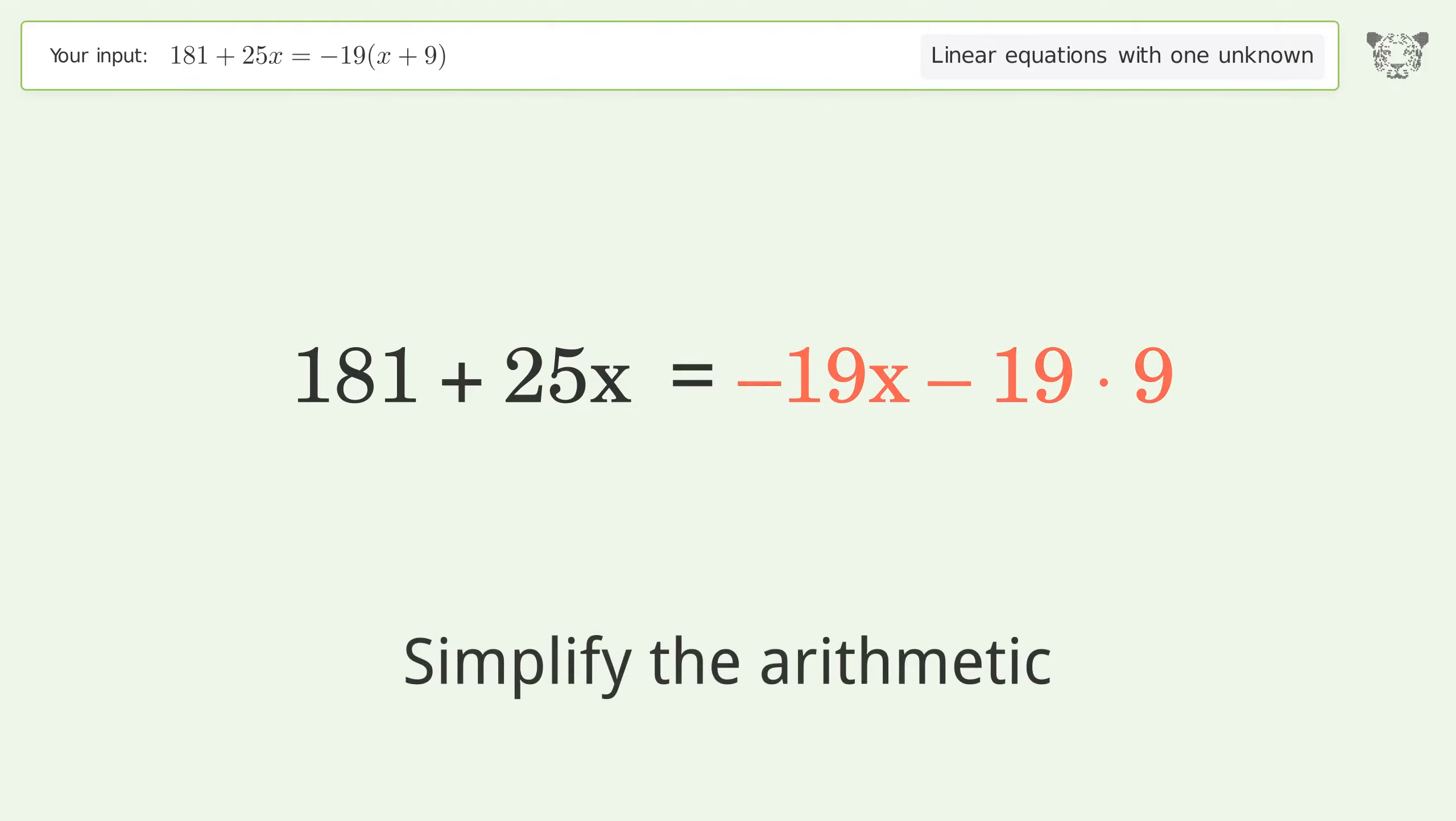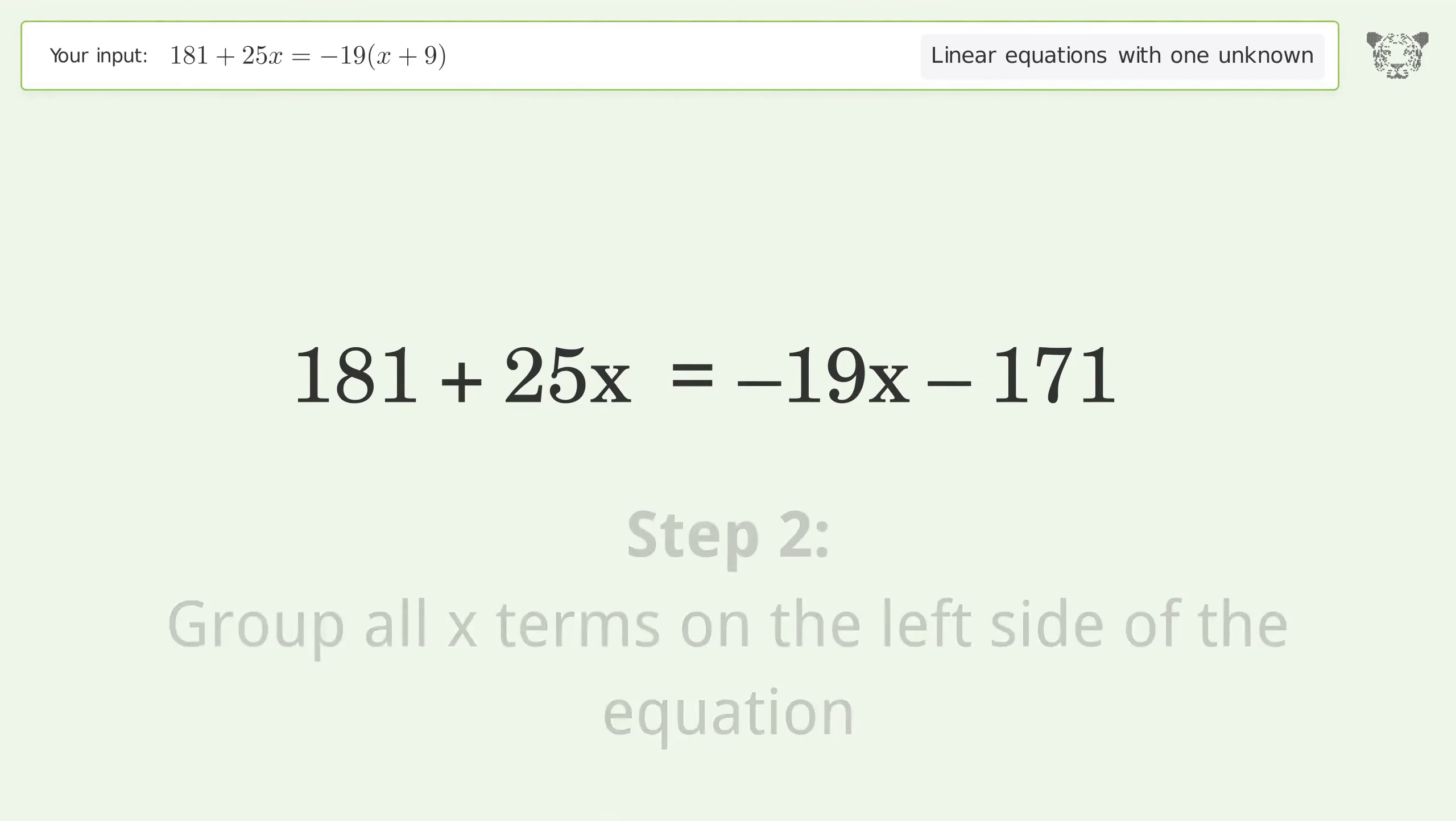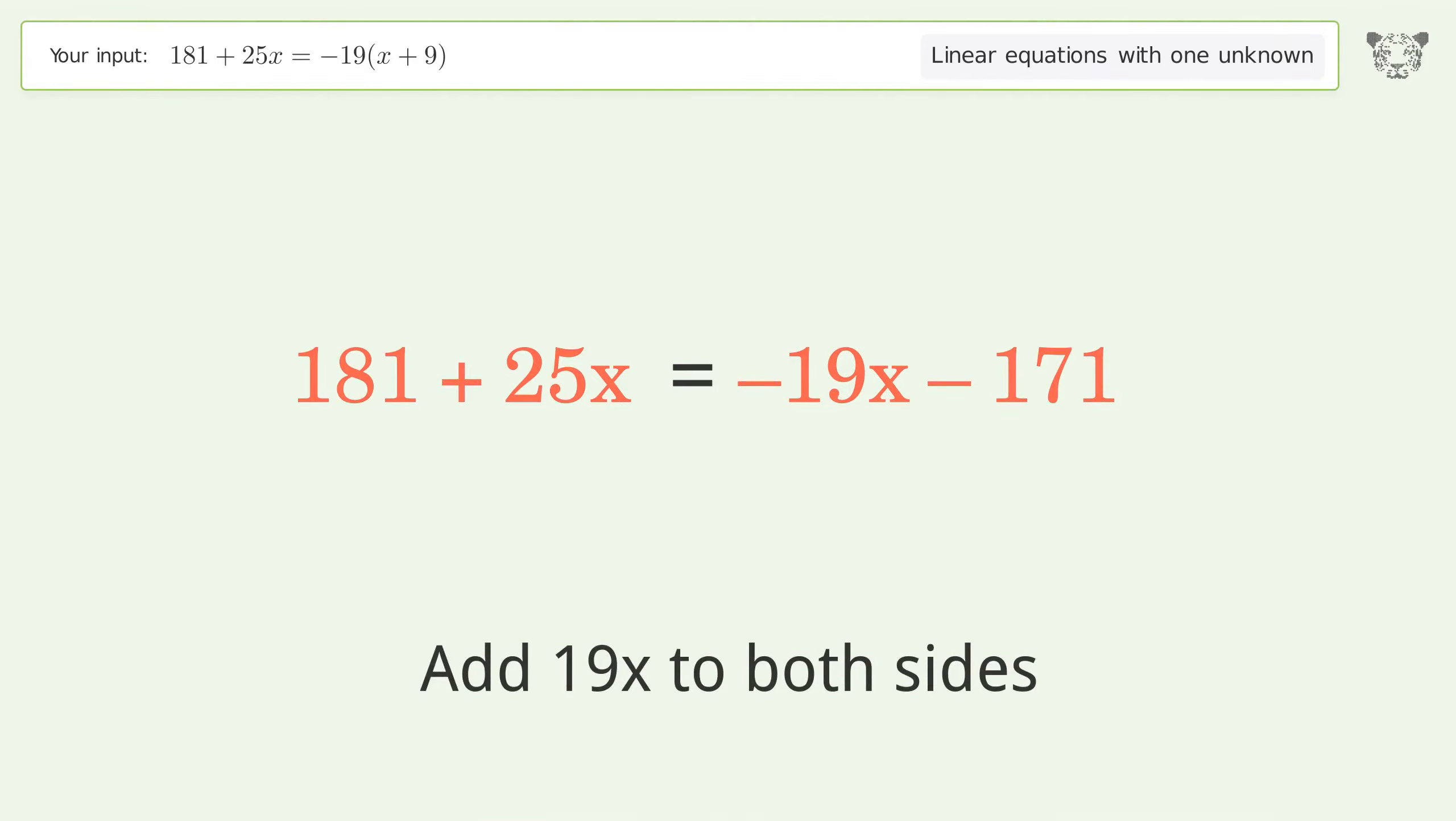Simplify the arithmetic. Group all x terms on the left side of the equation. Add 19x to both sides.